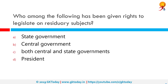Who among the following has been given rights to legislate on residuary subjects? The correct answer is the central government. Matters which are not included in any of the three lists — union, state, and concurrent — are known as residuary subjects, and the central government may handle them.